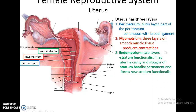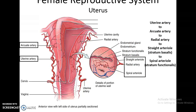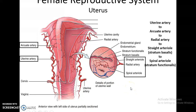The uterus has three layers of tissue. The outermost layer is the perimetrium, made up of areolar connective tissue and continuous with the broad ligament. The second layer, the myometrium, is the thickest layer and contains three layers of smooth muscle tissue, which is very important for contractions during childbirth. The innermost layer is the endometrium, which lines the uterine cavity. It has two layers: the stratum functionalis, which sloughs off during menstruation, and the stratum basalis, which is a permanent layer that reforms the stratum functionalis. Blood is supplied through the uterine artery, which splits into arcuate arteries, then radial arteries, then straight arterioles into the stratum basalis and spiral arterioles into the stratum functionalis.